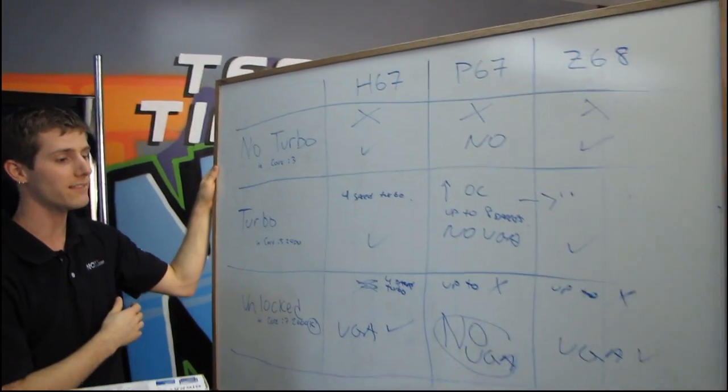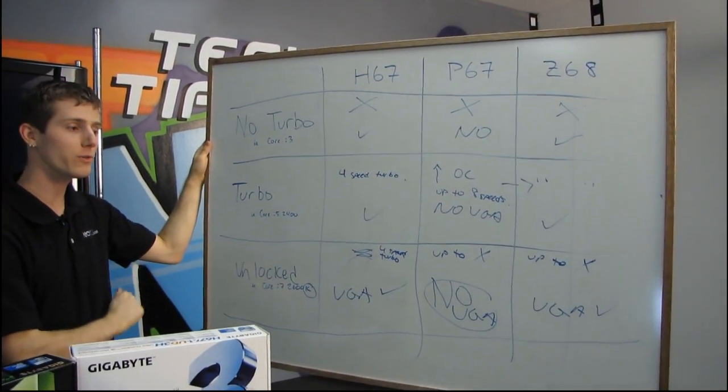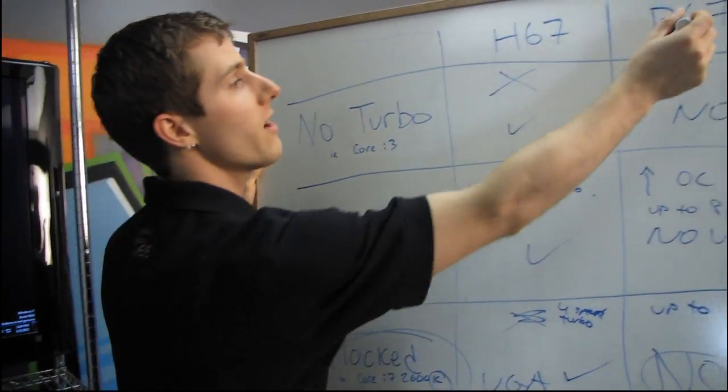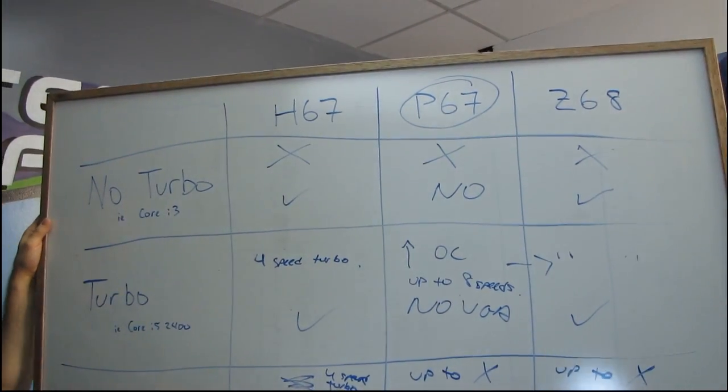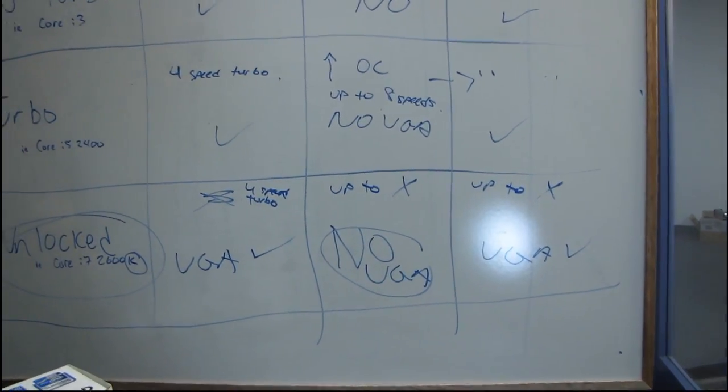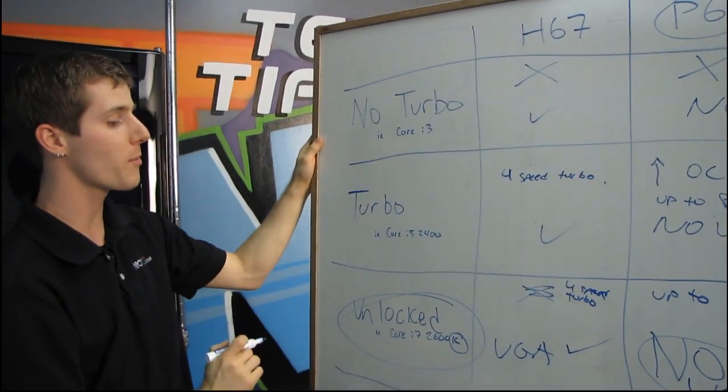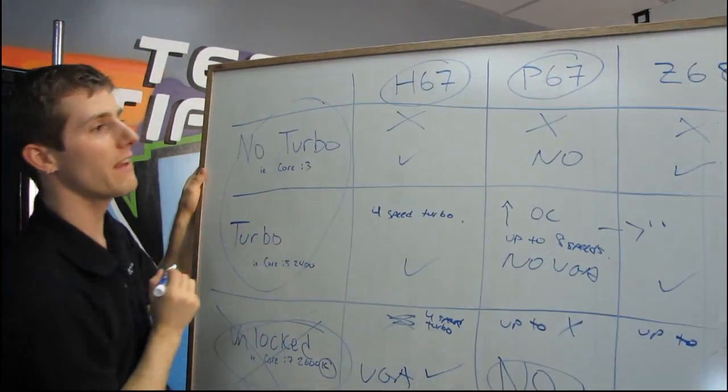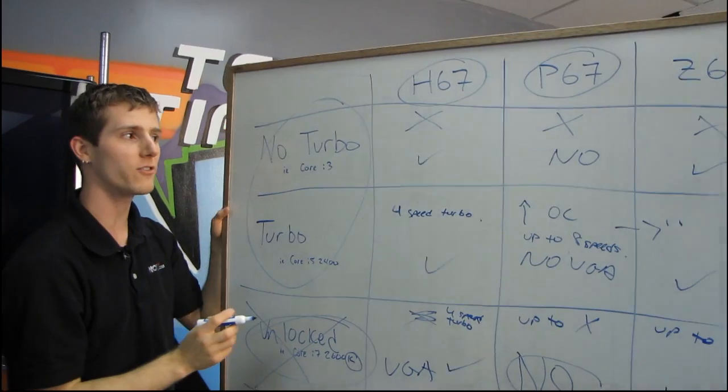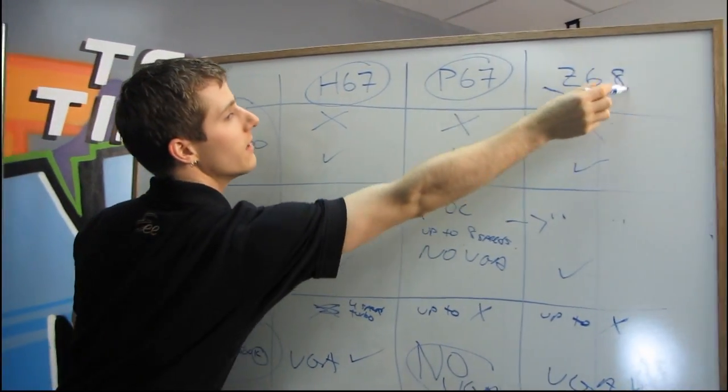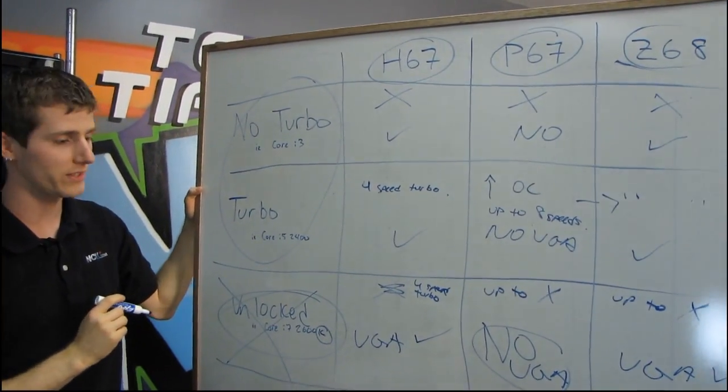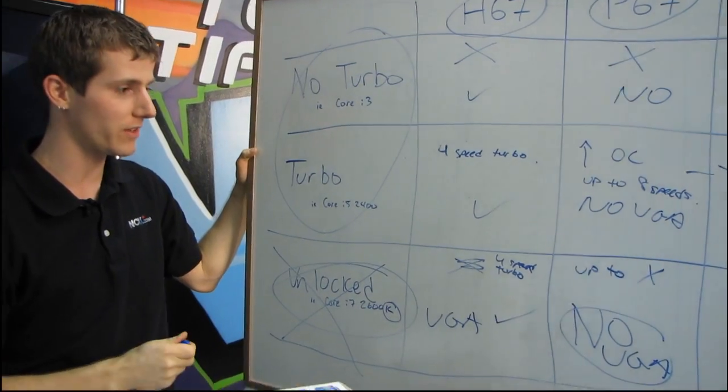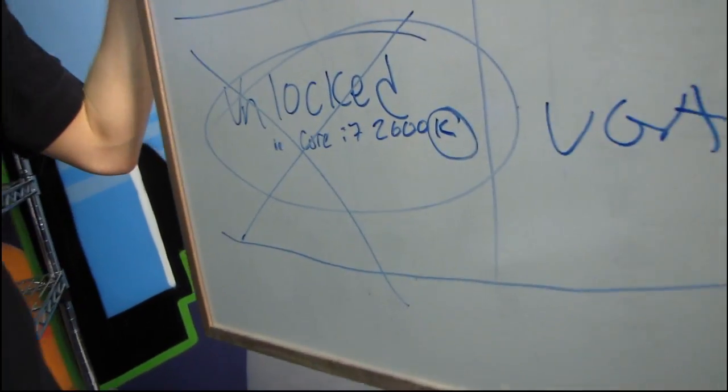So in summary, if you are not using onboard graphics and you are overclocking, your choice is going to be a K-series processor and a P67 motherboard. If you want to use onboard graphics and you don't really care quite as much about performance, you do not need a K-series processor—you can get a turbo or non-turbo processor with an H67 motherboard. If you want the best of both worlds, you'll just have to wait until Z68 launches. Don't forget to subscribe to Linus Tech Tips for more unboxings, reviews, and other videos.